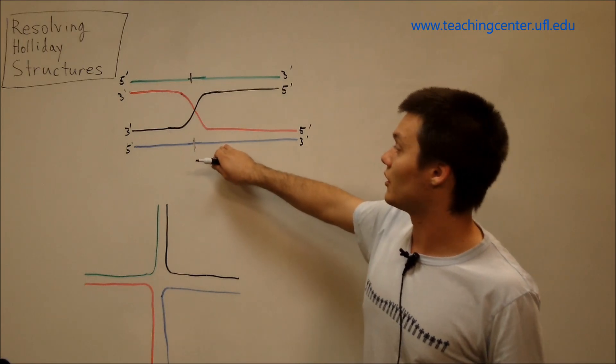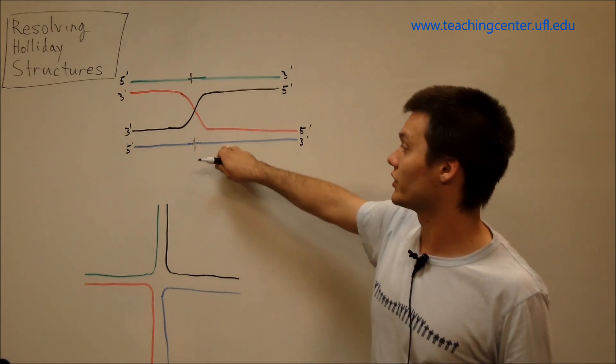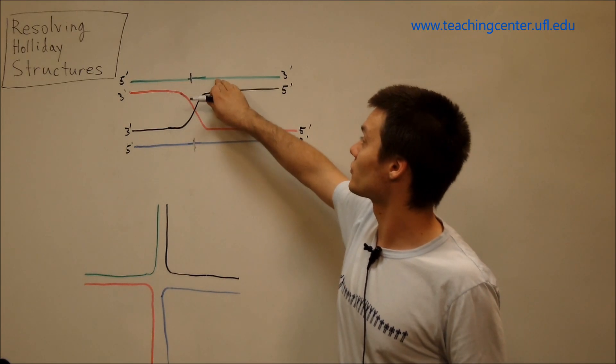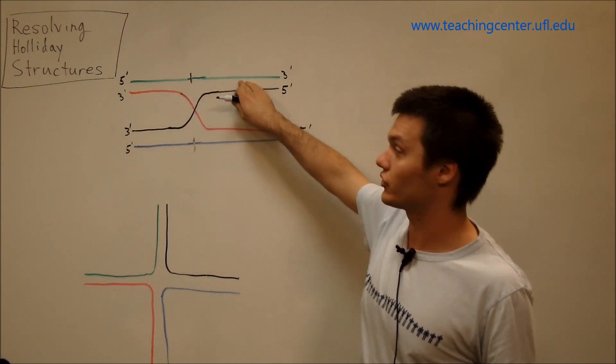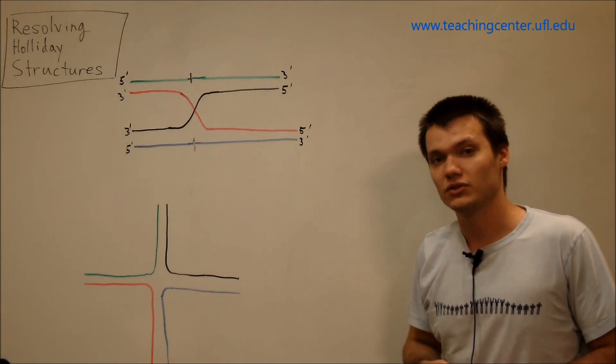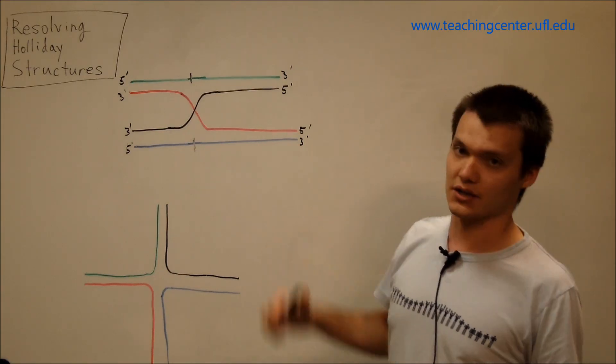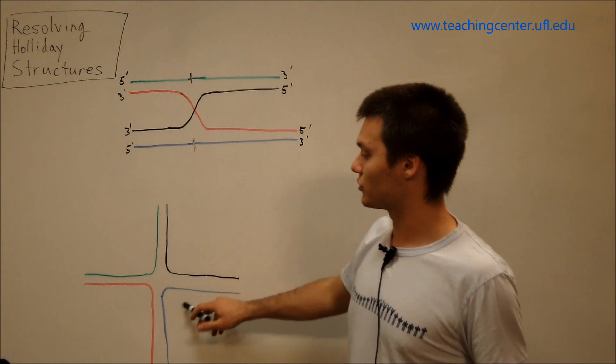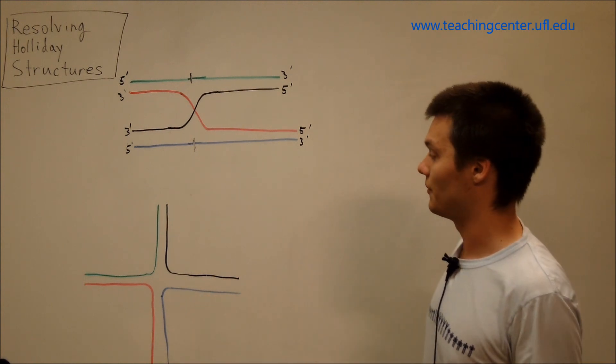And the shortcut to this is that you simply take these three prime ends and switch them around. So this blue strand here would become a green strand, and this green strand, or this part of this green strand would be blue. Now why can we do that? Well, it's hard to visualize on this, but it's easier to visualize it on this structure. So let's get into that.